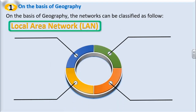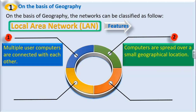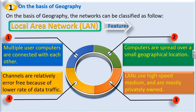Features of local area network: First, multiple user computers are connected with each other. Second, computers are spread over a small geographical location. Third, LANs use high-speed medium — medium here means cables, and generally nowadays we are using fiber-optical cables — and are mostly privately owned. Fourth, channels are relatively error-free because of the low rate of data traffic, since the data has to move within one particular office or branch or location, so there are fewer chances of error.